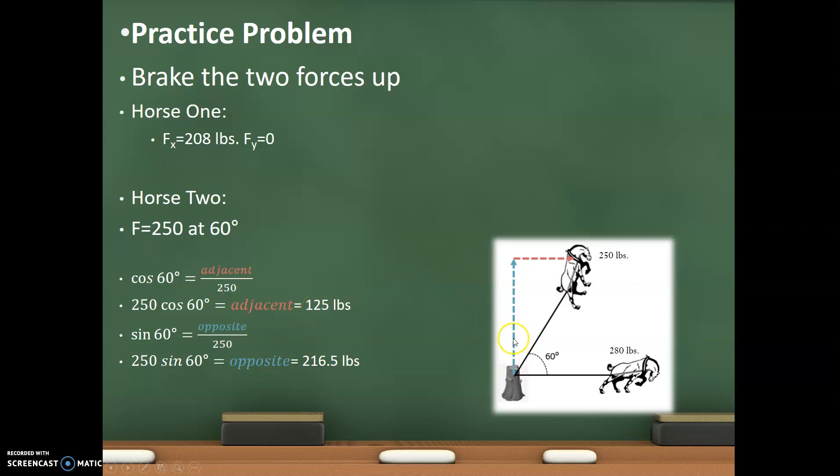Now, I repeat the same exact thing with my vertical component. And that's my vertical component or my opposite side. And the sine of 60 degrees is equal to opposite over 250. So I take it and move my algebraically over. 250 times sine of 60 degrees is equal to 216.5 pounds. So, again, sine of my angle is opposite over hypotenuse. Cosine of my angle is adjacent over hypotenuse.